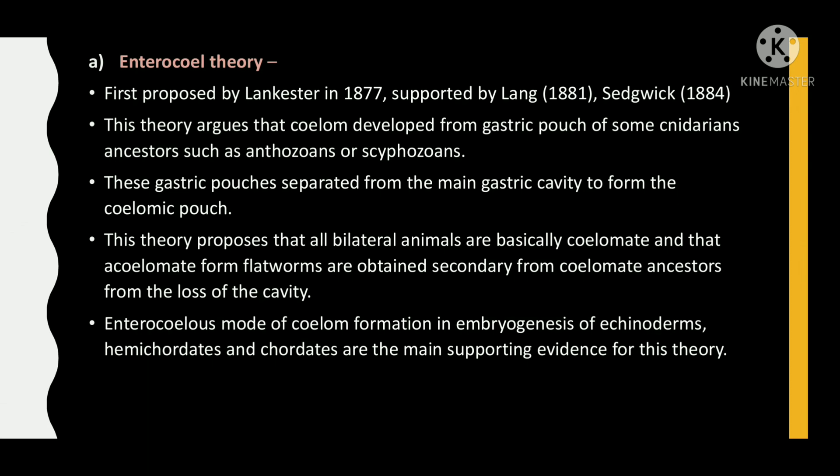This theory proposes that all bilateral animals are basically coelomate and that acoelomate flatworms are derived secondarily from coelomate ancestors through loss of the cavity. Coelom formation in embryogenesis of echinoderms, hemichordates, and chordates is the main supporting evidence for this theory.